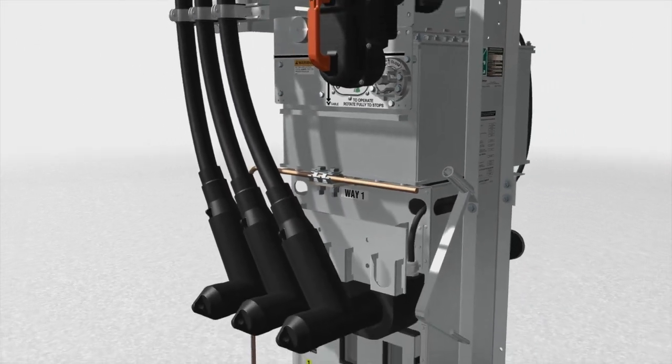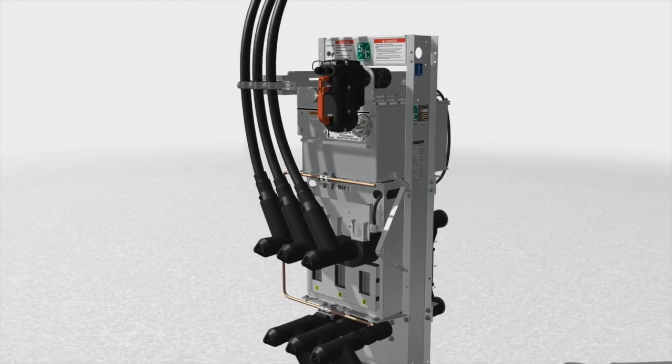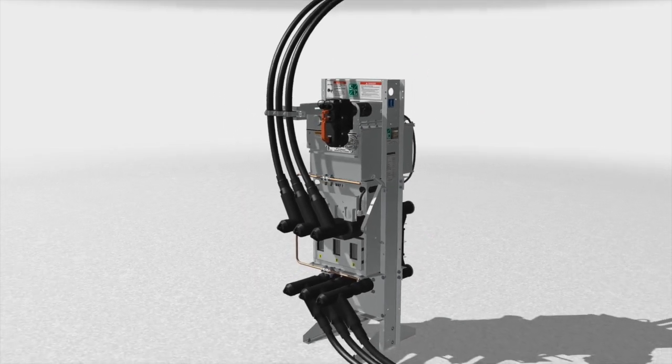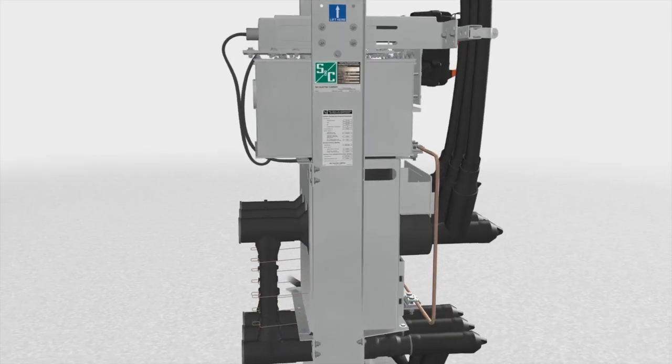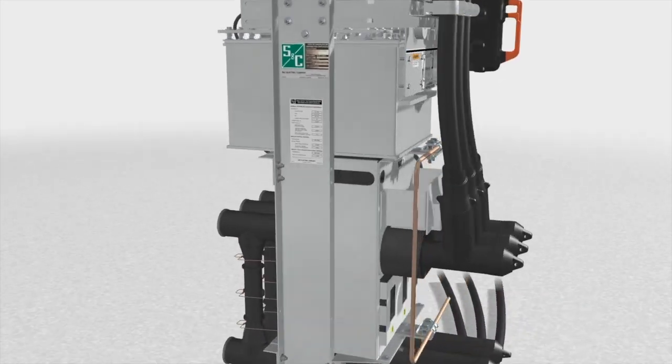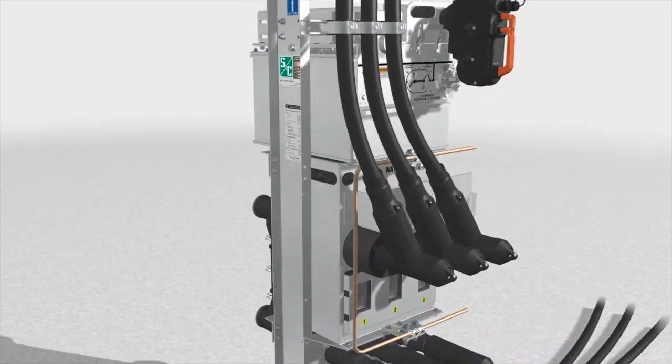For a multiple cable connection, cables smaller than 1-0 copper or equivalent should not be used. Connect the cable concentric neutral wires to the grounding system as appropriate.